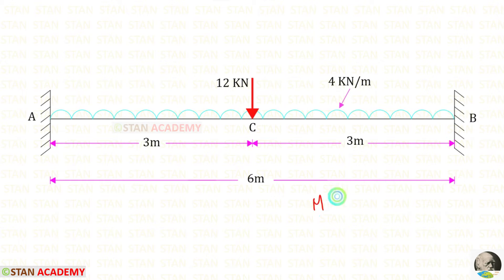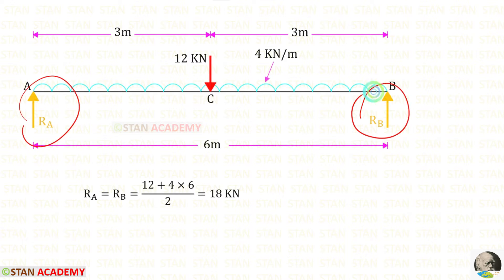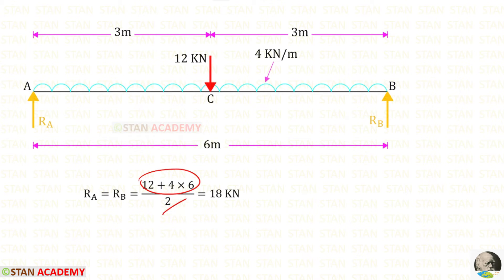In this method, first we have to draw the Mu diagram. To draw this diagram we have to convert the fixed beam into a simply supported beam. In this simply supported beam, let us find the vertical reactions Ra and Rb. The loading is symmetrical, so we find the total load and divide by 2. The point load is 12 kN and the UDL is 4 kN/m multiplied by 6 meters, giving us Ra and Rb equal to 18 kilo newton.